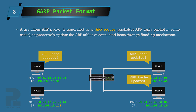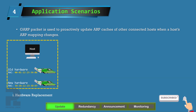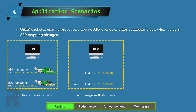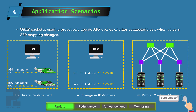Some useful scenarios of the Gratuitous ARP message are: first, they are sent by a host to update the ARP mappings of other hosts on the network. Whenever the IP address or MAC address of a host's interface changes, it issues a Gratuitous ARP message to update the ARP cache table of connected hosts — such as when the Ethernet hardware or network interface card is replaced on a device, a host IP address changes, or in a cluster scenario where a virtual machine migrates to a new physical machine.